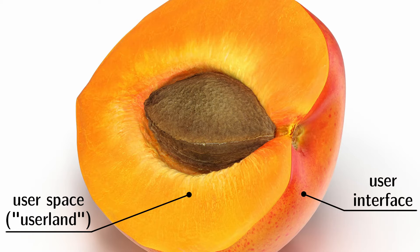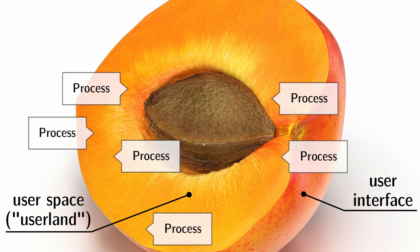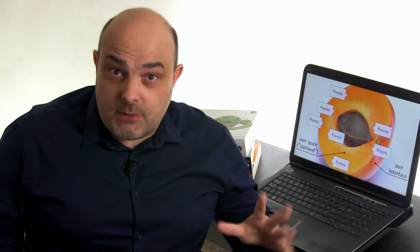Behind that, there is a dense and thick part called the user-land. This is the home of the processes. A process is nothing more than a program running on your computer, and you may have tens or hundreds of them running at the same time.